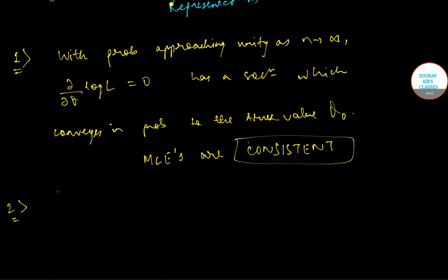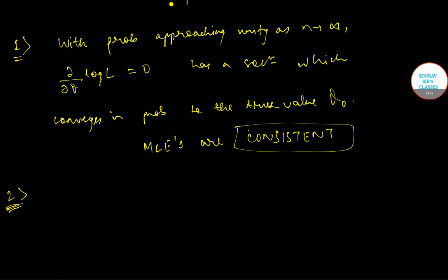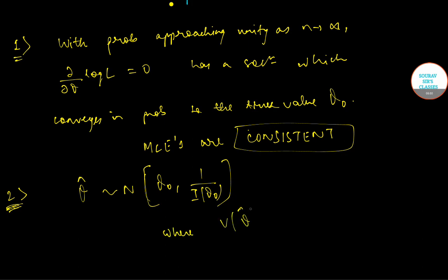The next result is also known as the asymptotic normality of MLEs. It states that a consistent solution of the likelihood equation is asymptotically normally distributed about the true value theta_0. Thus, theta hat follows asymptotically normal(theta_0, 1/I(theta_0)), where the variance of theta hat is equal to 1/I(theta_0).